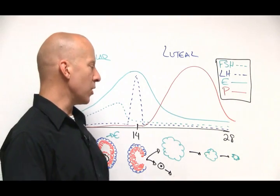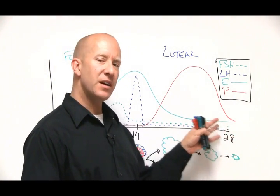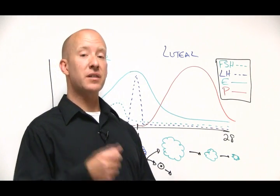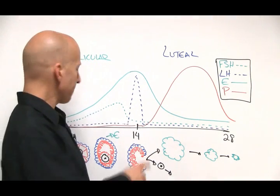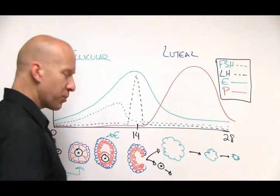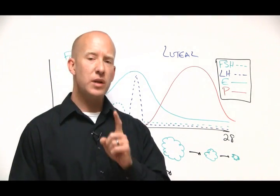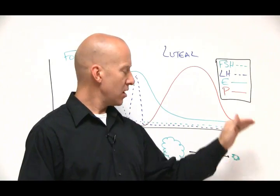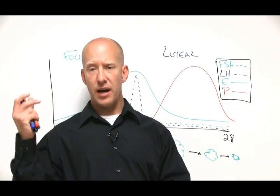If you remember from the previous video, basically every event that happens in this cycle is predicated on the event preceding it. For example, FSH production in the first place was related to how many hormones were still circulating in the system. The lower the hormones, the higher the FSH.